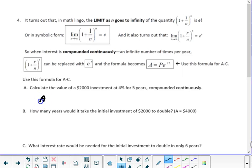So, go back and calculate now what we would get with E in here. So, remember, E is a number on the calculator. So, we'd say 2,000 times E to the 0.04 times 5.